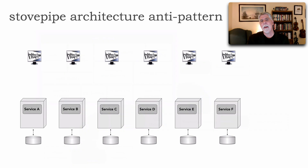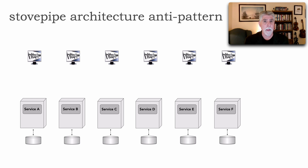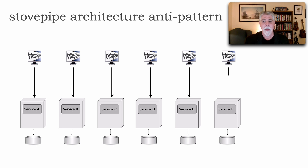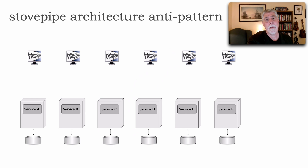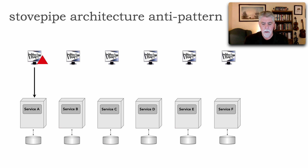Now let's look at an example in microservices. Say we have six services, A through F, and we do all the due diligence to create a really solid microservices architecture where each request goes to a specific single-purpose service owning its own data. This is exactly how to do microservices — it was well-formed. But what happens? We make a change to the first request going to service A, and based on that new functionality, we now have to go to service D and E, with E needing additional data from service D.